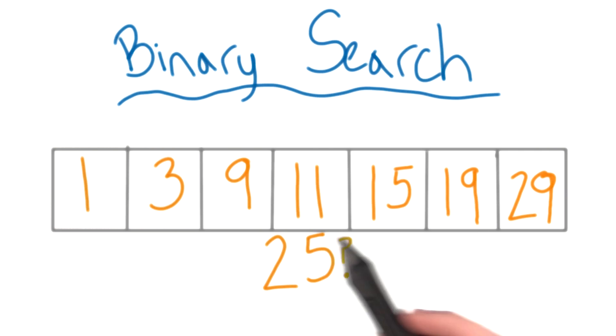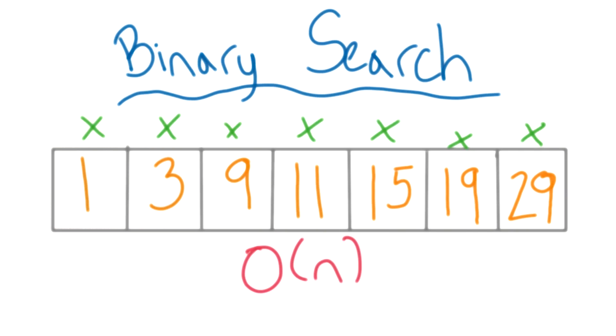If you start at the front and check every number in the array, the time could be big O if your number is really big. The same happens if you start at the other end. You could have a really small number and it might end up taking linear time in worst case.